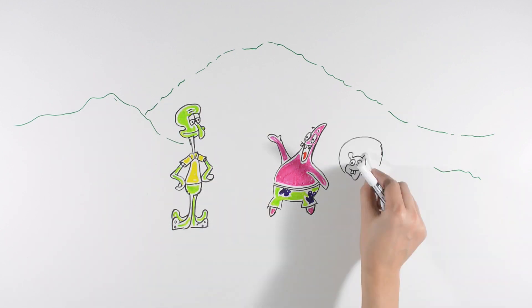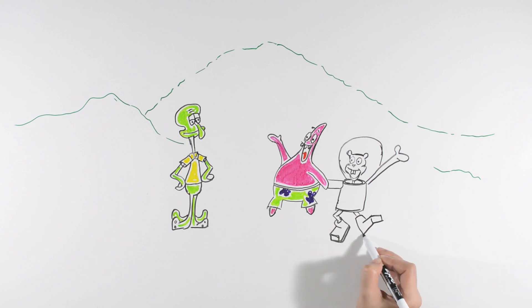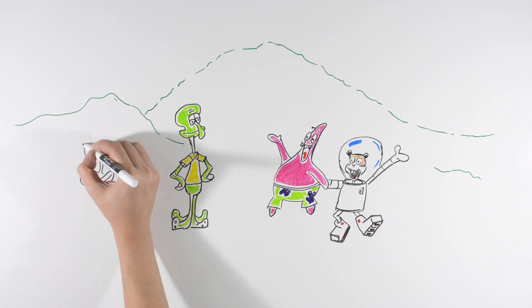Another of SpongeBob's friends is Sandy Cheeks, a thrill-seeking and athletic squirrel from Texas who wears an air-filled diving suit to breathe underwater. She lives in an oak tree trapped in a clear glass dome locked by an airtight hand-turned seal. She's a scientist and expert in karate.